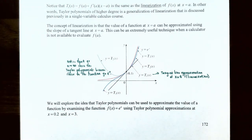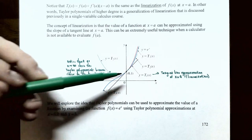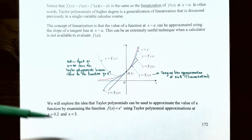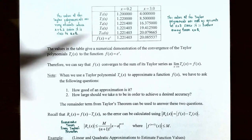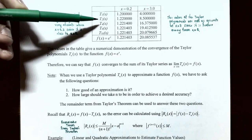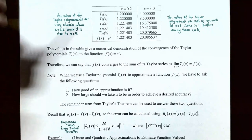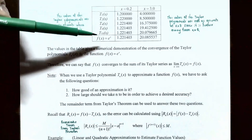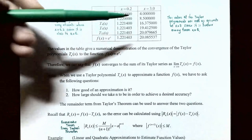You can use Taylor polynomials of any degree to approximate a function whenever you're near the center. We're going to explore Taylor polynomial approximations by examining f(x) = e^x, looking at approximations at x = 0.2 — which is very close to the center at x equals zero — and also at x = 3, which is not close to the center. In a table we have the first, second, fourth, sixth, and tenth degree Taylor polynomials, as well as the function itself, evaluated at both x = 0.2 and x = 3.